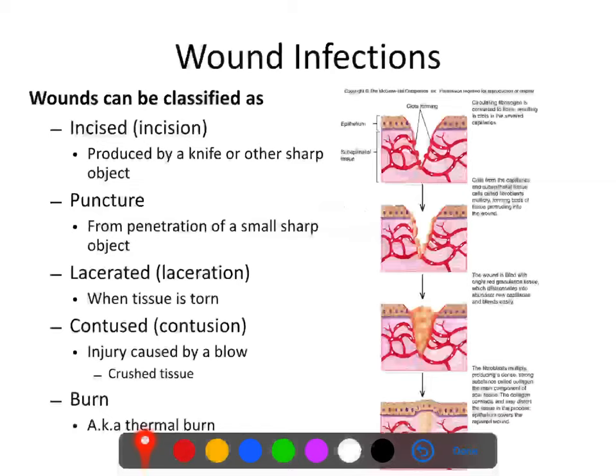First, you can have an incision, which is just the fancy name for a cut. Incisions are typically narrow, medium deep, and bleed profusely. Here you can see a typical incision — it would actually go down with a whole lot of depth, so it's going to bleed quite a lot.